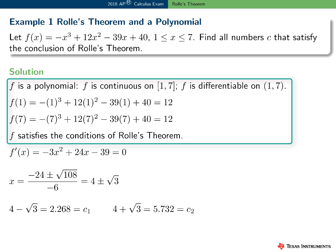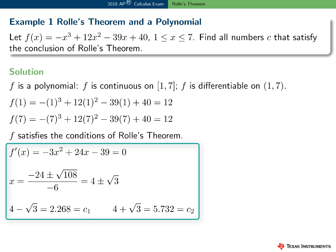Therefore, f satisfies the three conditions of Rolle's theorem. To find the values of c guaranteed to exist, find f prime of x, set this expression equal to zero, and solve. In this example, there are two values of c such that f prime of c equals zero.